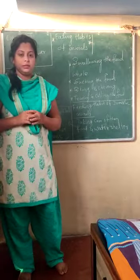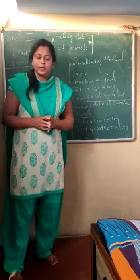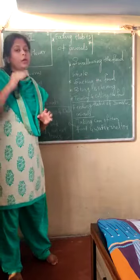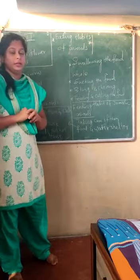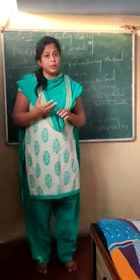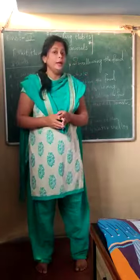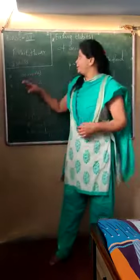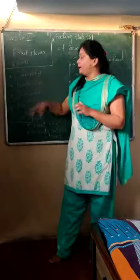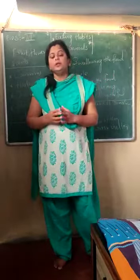Before we start this chapter, we have one small leftover point from the previous chapter. We learned about the parts of the plants and how each part helps. We left only one small part: about fruit, flower, and seeds, and how they are going to help the plant.